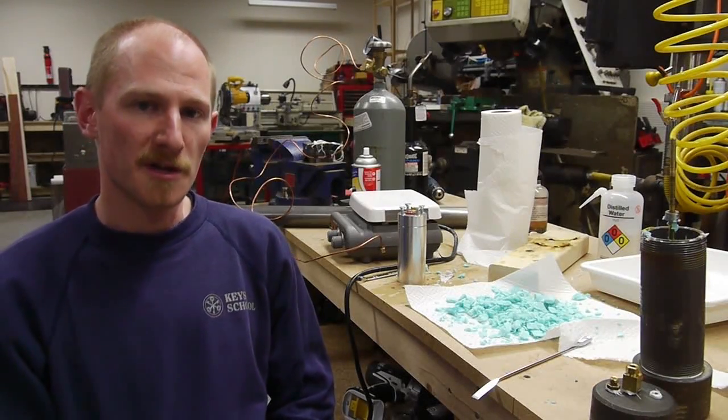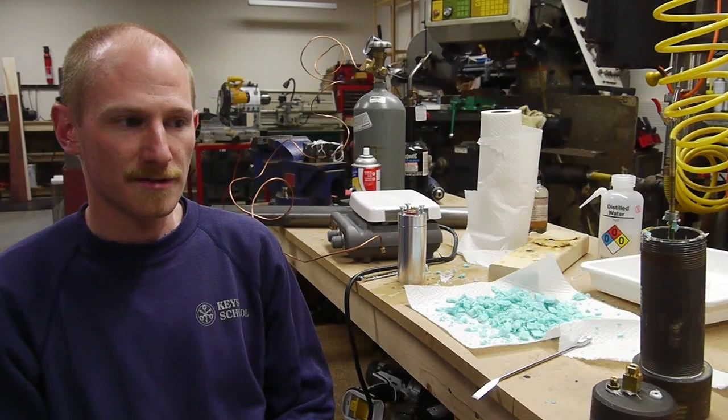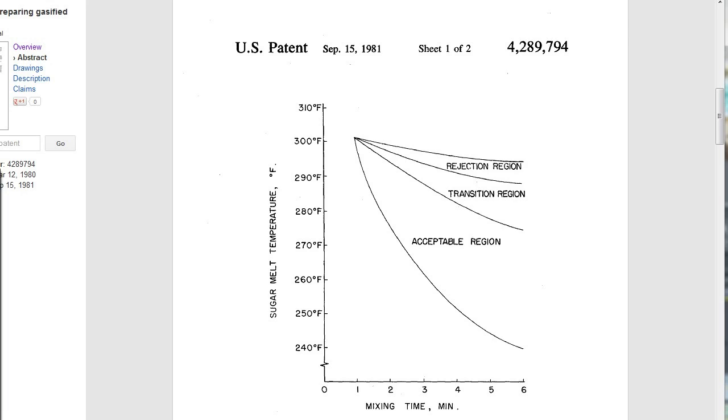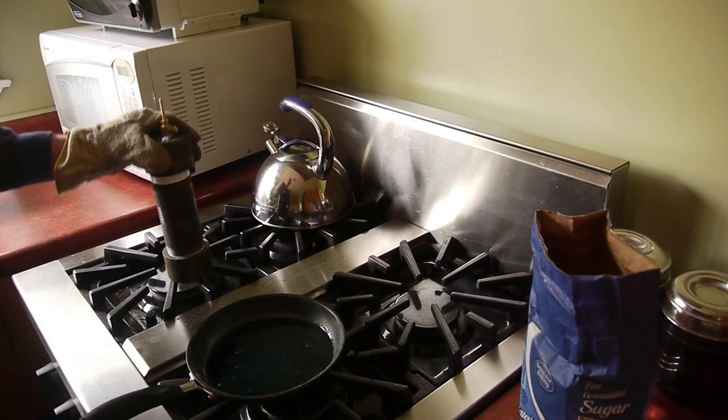As usual I got a lot of my information for this project from patents. And one particular patent had a chart that showed the desirable temperature and mixing time for making high quality Pop Rocks candy. So I knew what temperature I was shooting for, about 280 degrees F or 290. And the description in the patent was also quite helpful.